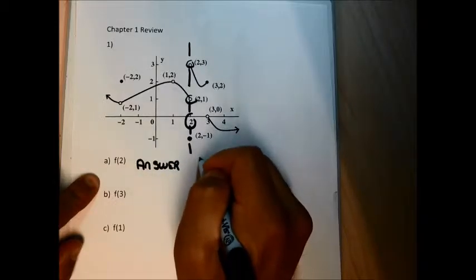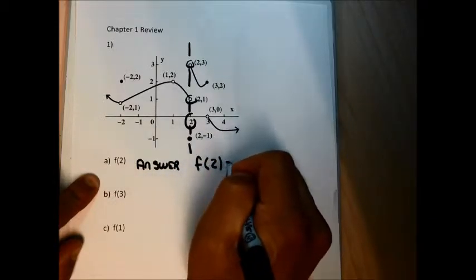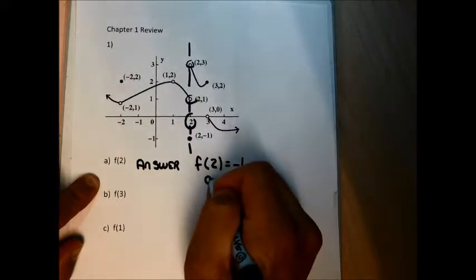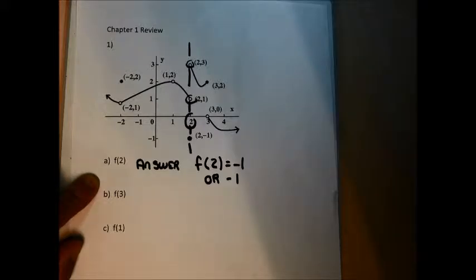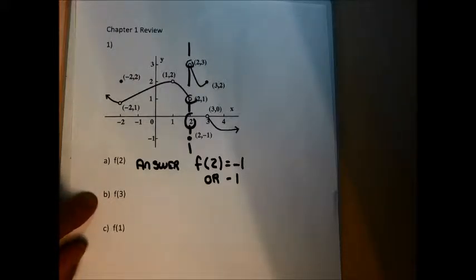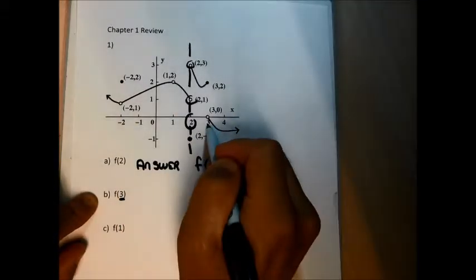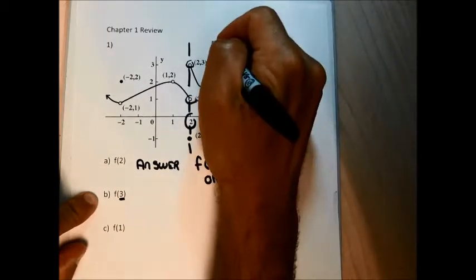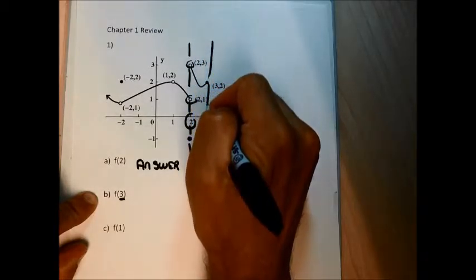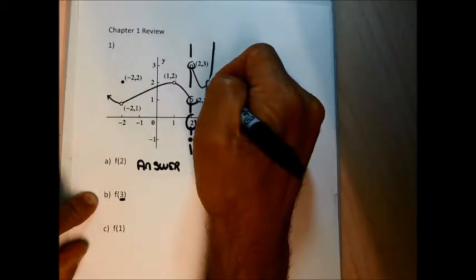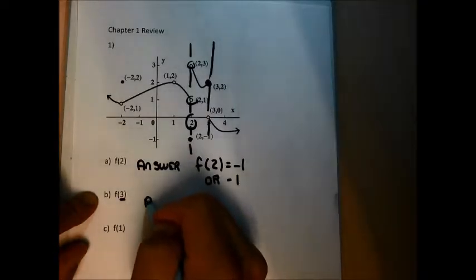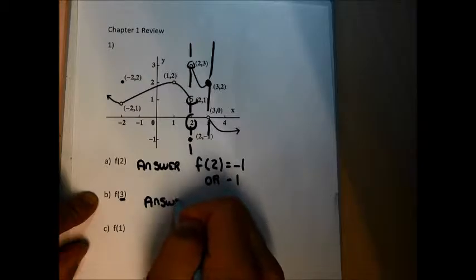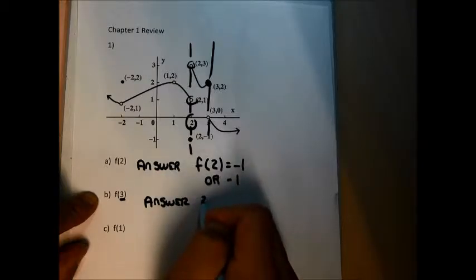On the test you could write f(2) = -1, or just write -1. You don't have to write the problem with the answer. For question 1b, I find 3 on the x-axis, look up and down until I find the solid circle point — that's the point (3, 2). So my answer to part B is f(3) = 2, and I'd probably just write 2.